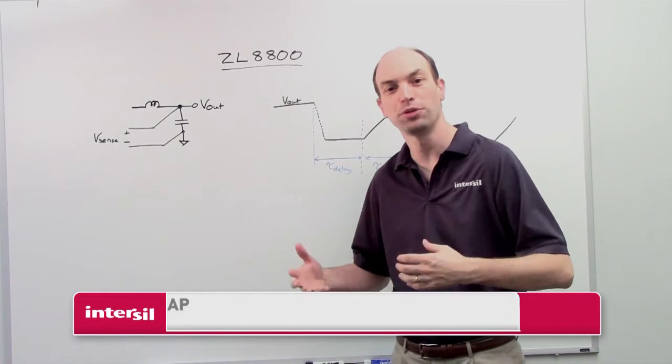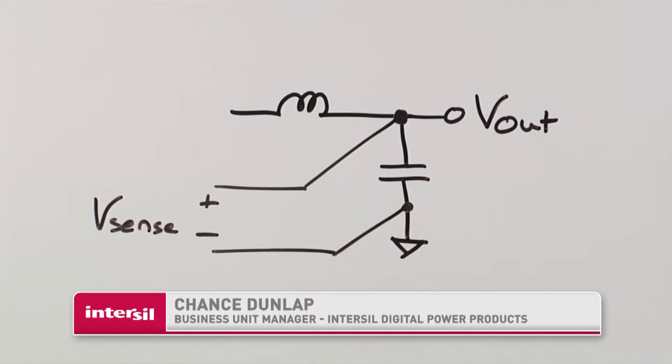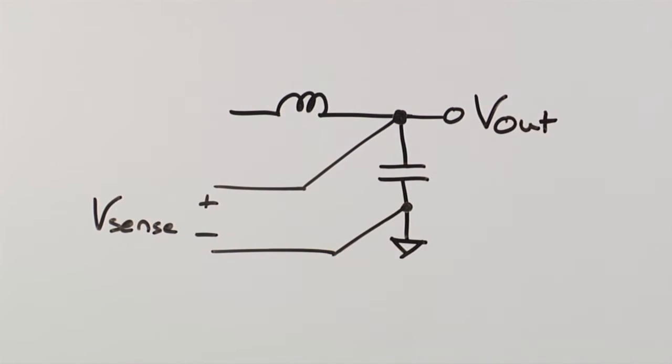Let's take a look at how the overvoltage protection works on the 8800. The ZL8800 uses a differential sense line, that way you can monitor right at the point of load or across the output capacitor for the power supply.